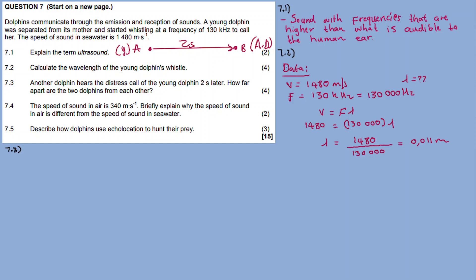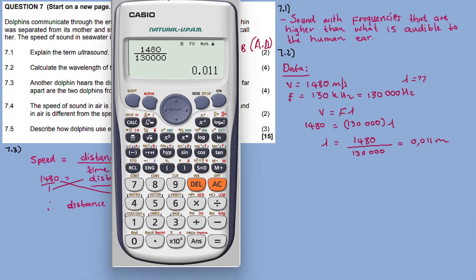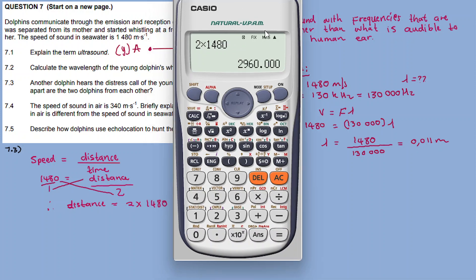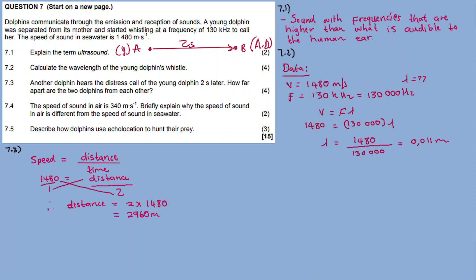So we need to calculate the distance between the two dolphins. We have the speed of sound waves in seawater and we have the time. Using speed equals distance over time: 1480 equals distance divided by 2 seconds. Cross-multiplying, distance equals 2 times 1480, which equals 2960 meters. So the distance between the two dolphins is 2960 meters.